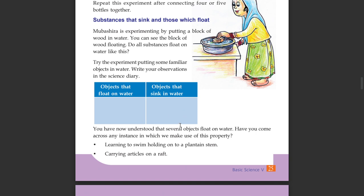You have now understood that several objects float on water. Have you come across any instance where we make use of this property? You can see that we are learning to swim by holding on to a plantain stem. This is the plantain stem — you can see its cross section. So we are able to use different objects that float.